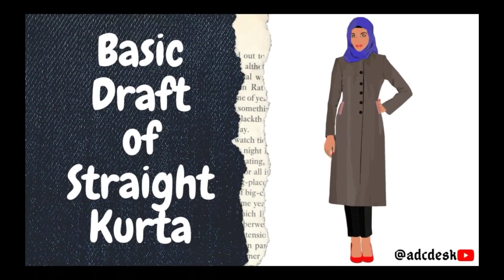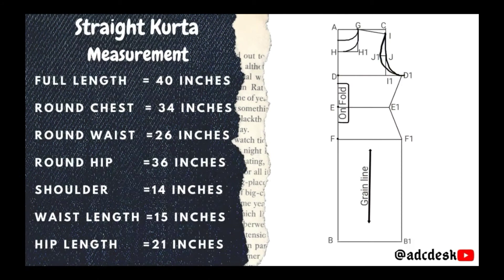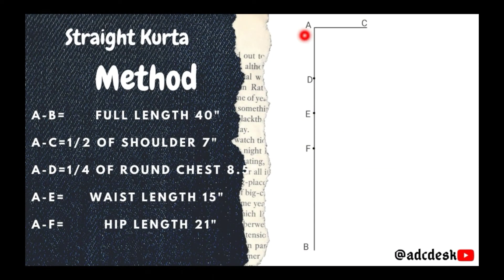So here is the first step. First of all, we will mark the full length A to B, that is 40 inches. Then we will mark A to C, half of shoulder.